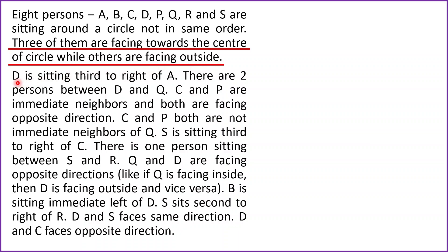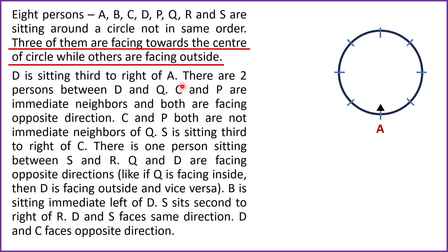D is sitting third to the right of A. Let's consider Case 1: suppose A is facing towards the center. Since A is facing inside, this side will be the right side of A and this side will be the left side. D is third to the right, so count one, two, three — D will be placed here at this position in Case 1.